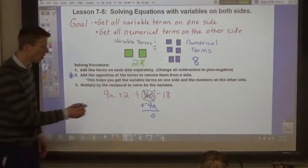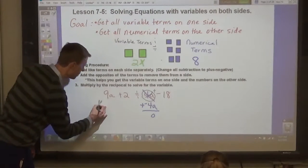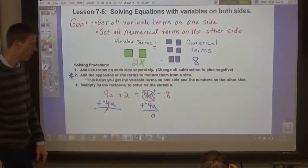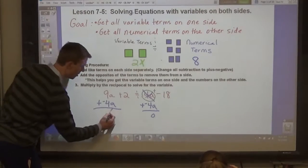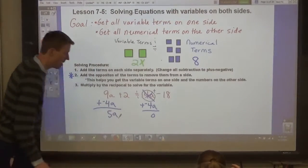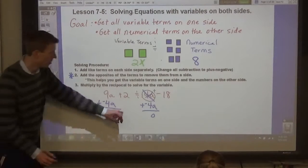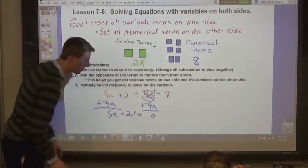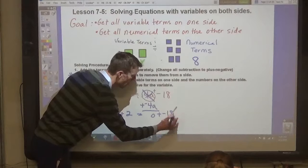Okay? So, if you add negative 4a's to this side to get rid of those 4a's, then you have to add negative 4a's to the left side, and then whatever results is what's left. 5a's. So, now, in this equation, you have 5a's plus 2 on the left side, and 0 plus negative 18 on the right side.